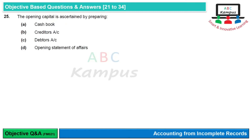Question 25: The opening capital is ascertained by preparing? Opening capital के लिए हम opening statement of affairs बनाते हैं — इसमें estimated amounts of assets और liabilities को list किया जाता है, और फिर उनके difference के तौर पर equity या capital की amount find out की जाती है। तो D option would be correct।